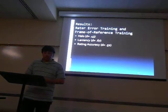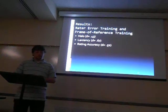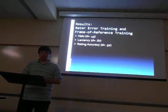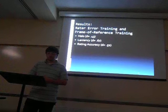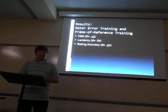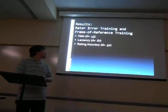When looking at the results of combining rater error training and frame of reference training, the study showed moderate effect sizes for reducing halo and leniency errors at 0.43 and 0.67 respectively. It also showed a moderate effect size of 0.52 for increasing rating accuracy. However, there were no data points available for observational accuracy.